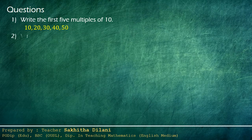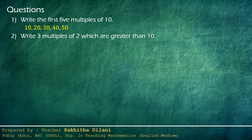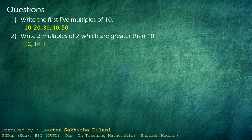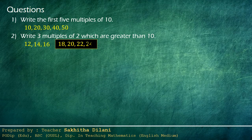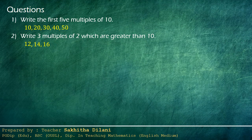Second question: write three multiples of two which are greater than ten. You have to select the multiples of two greater than ten. The first multiple of two greater than ten is twelve. Then we need to write two more, so you can write fourteen, sixteen — or eighteen, twenty, twenty-two, twenty-four, and so on. You have to write any three multiples of two which are greater than ten.